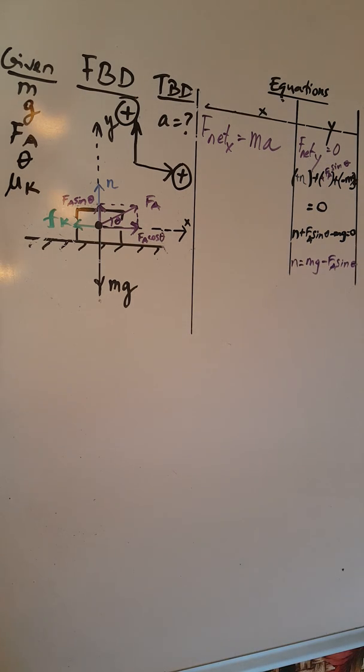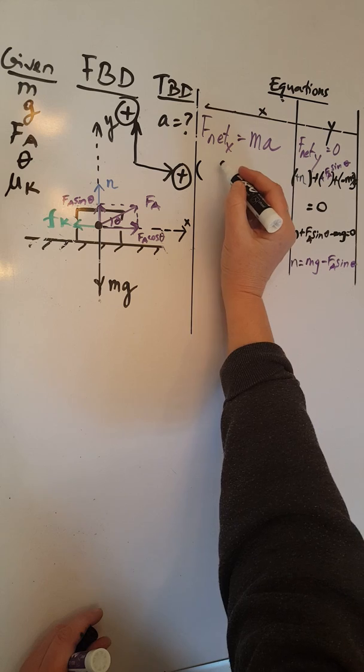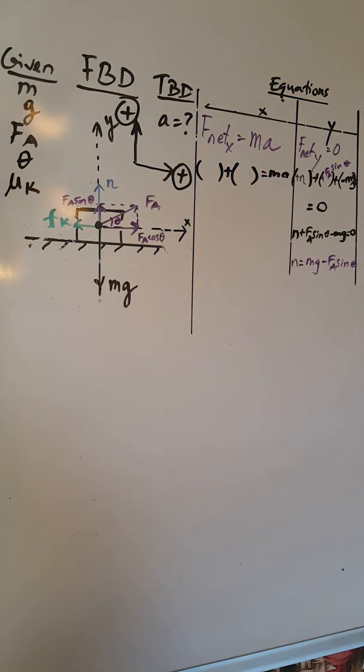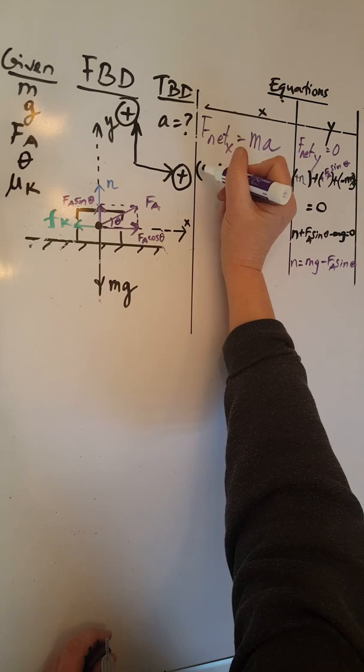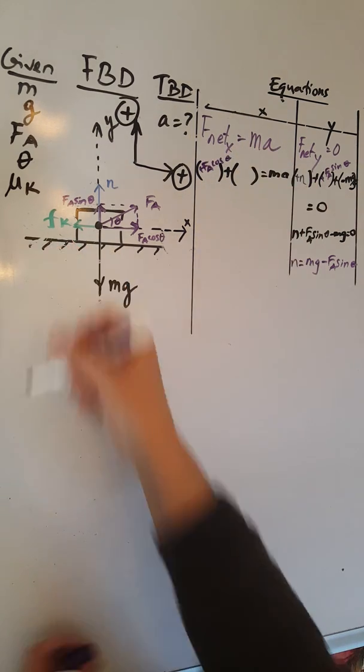Now we are going to move on to the X equation. On the X we only have two forces. So when we put those two forces together as a vector sum, we need to equal that to MA. Those two forces will be the positive FA cosine theta and the negative FK.